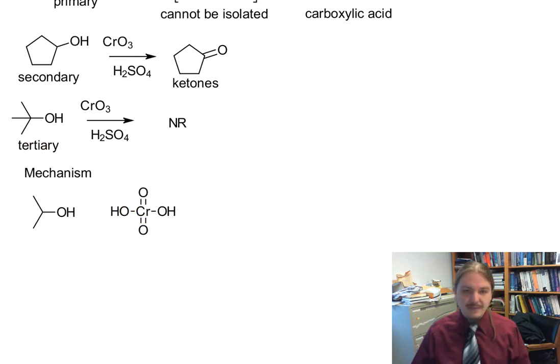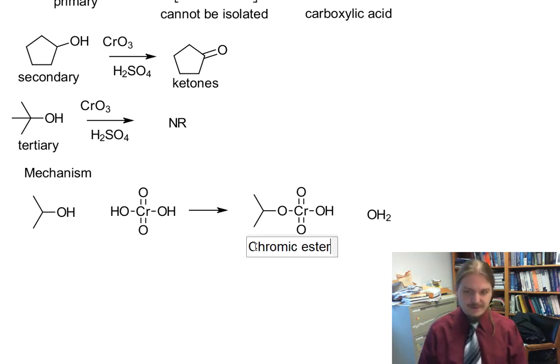And what happens, this first step is what I'm not going to draw the arrows for, but our alcohol and chromic acid can react and form a chromic ester, which, because I mentioned the color of chromic acid, is still orange.